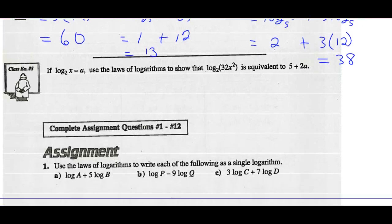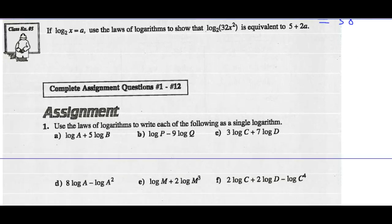Let's have a look at example 5. If the log of X base A is 2, prove that the log of 32X squared base 2 is the same as 5 plus 2A. So again, step 1, I'm going to change log of 32X squared base 2 into a sum of two logs using my product law. So log of 32 base 2 plus the log of X squared base 2. And that's supposed to equal 5 plus 2A.